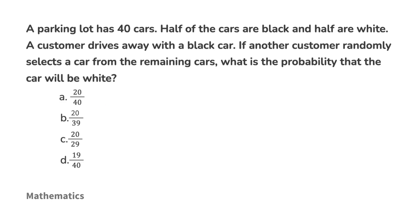A parking lot has 40 cars. Half of the cars are black, and half are white. A customer drives away with a black car. If another customer randomly selects a car from the remaining cars, what is the probability that the car will be white? This is a great example of conditional probability. Pause the video, solve this, and come back for the correct answer.